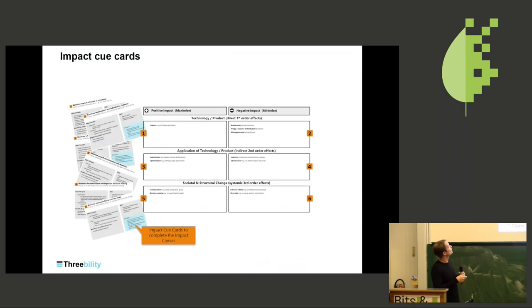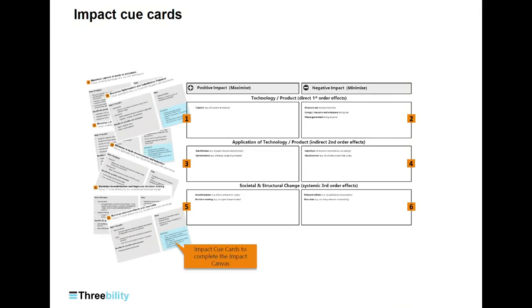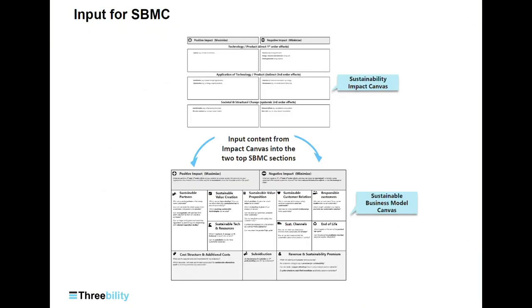For this tool we developed a number of example cards for each area for users to simply remind themselves which possible impacts could be generated in each of these six fields. And then the sustainable impact canvas can be used to feed and generate the impact for the sustainable business model canvas.